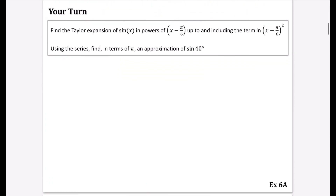Now have a go: find the Taylor expansion of sin x in powers of x minus π/6, up to the squared term. Then, using the series, find an approximation for sin 40° in terms of π. Pause the video and try it yourself.